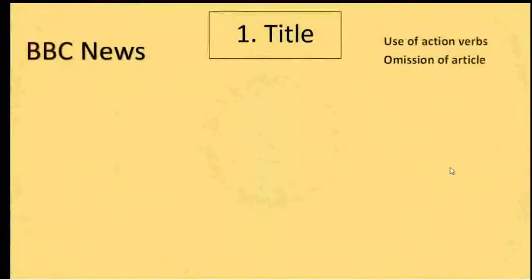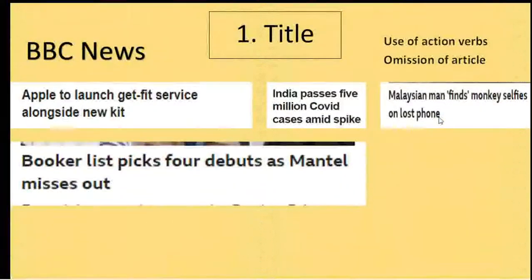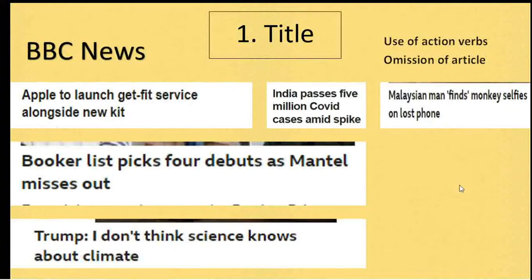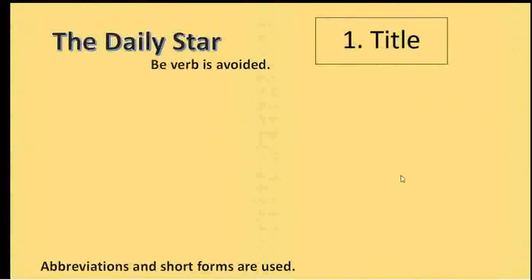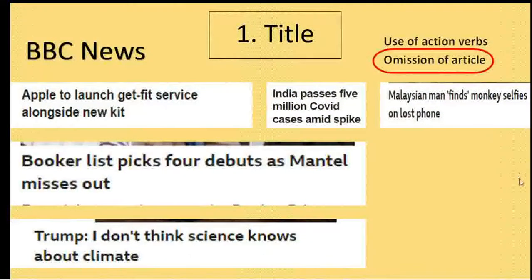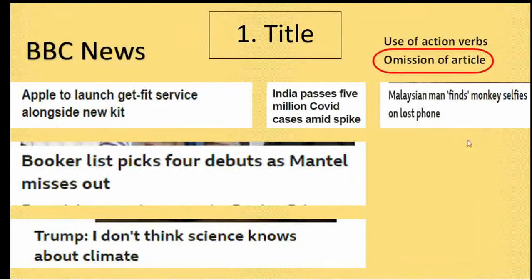First, let's talk about the title. Here you find some titles. While writing a title, you should follow certain things. First thing is omission of article — we do not use articles in a title. And another thing is the use of action verbs. In all the titles, action verbs have been used.